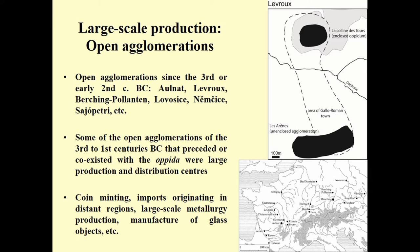Some of these open agglomerations were large production and distribution centers, fulfilling a very important economic role. In some of them we also have evidence for sanctuaries and religious and political activities. Among the features found in many of these open agglomerations: coin minting, imports from distant regions including sometimes from the Mediterranean, metallurgical production on a large scale, manufacture of glass objects, and so on — a whole set of economic activities that in some cases have been described as proto-industrial.